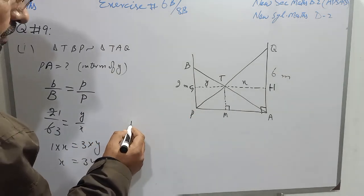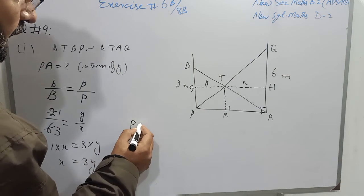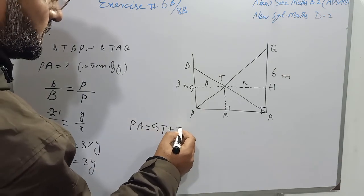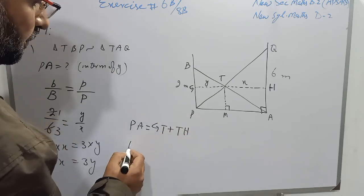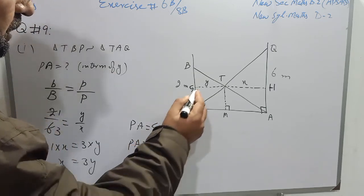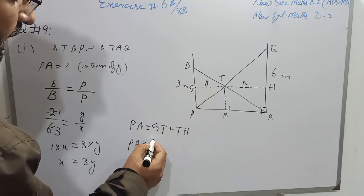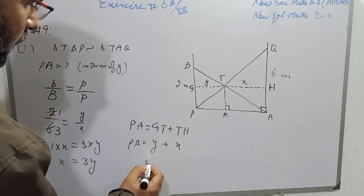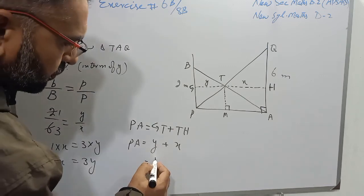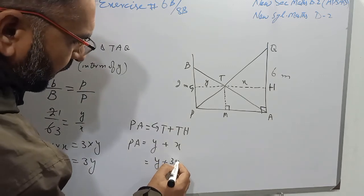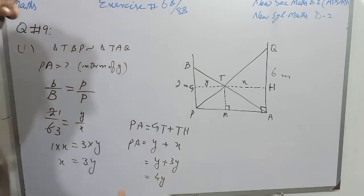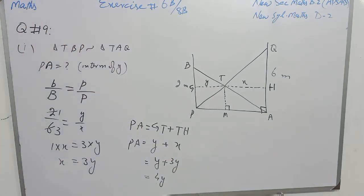PA equals GT plus TH. GT is Y, whereas TH is X, and the value of X is 3Y. So Y plus 3Y equals 4Y, which is the length of PA in terms of Y.